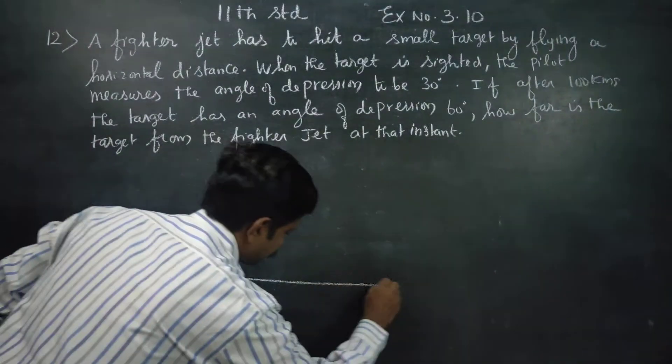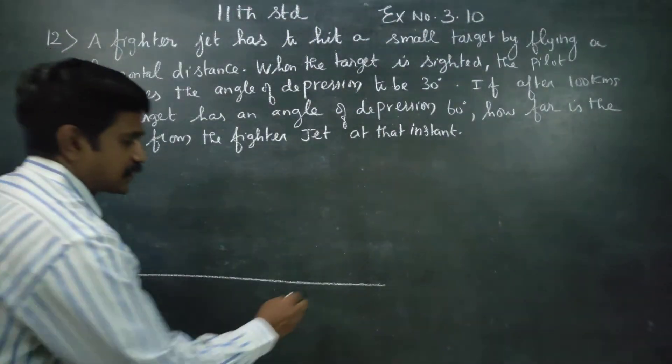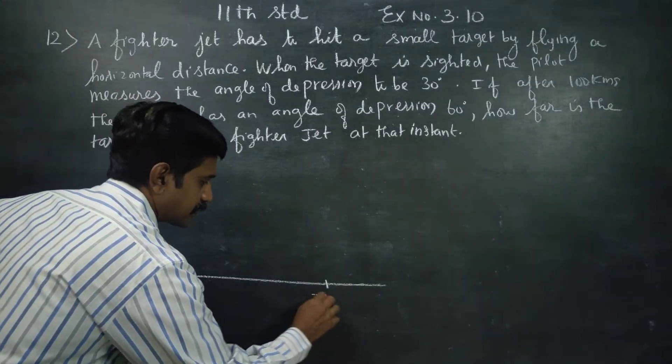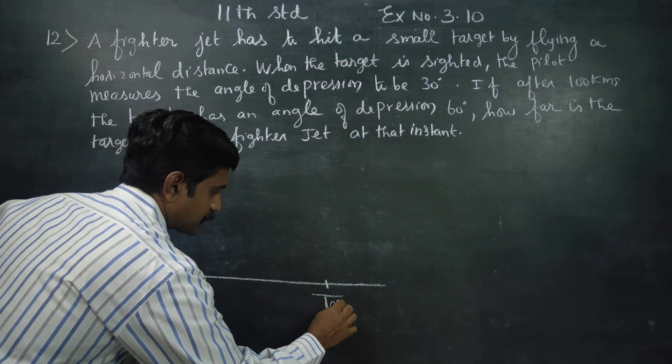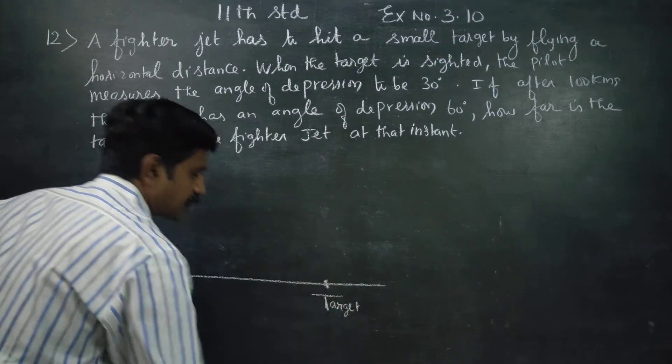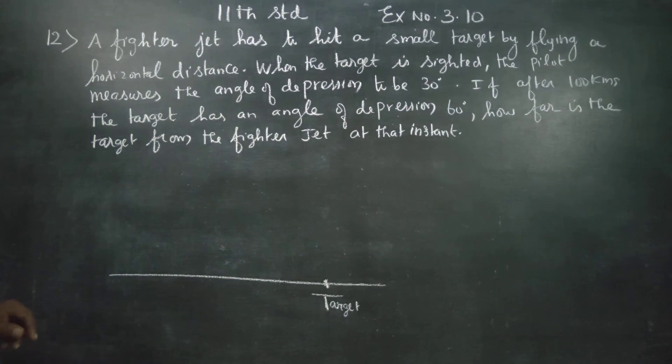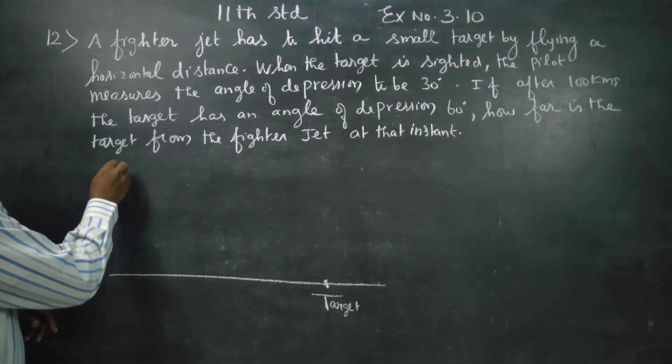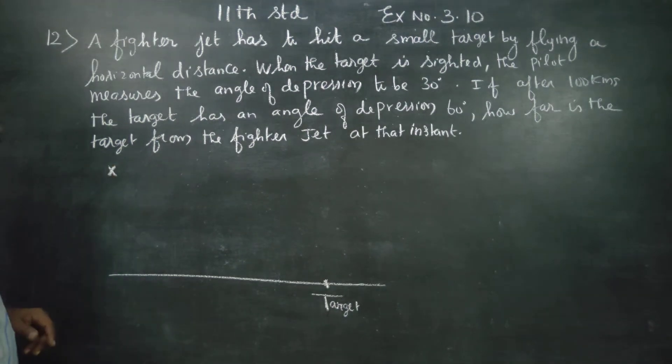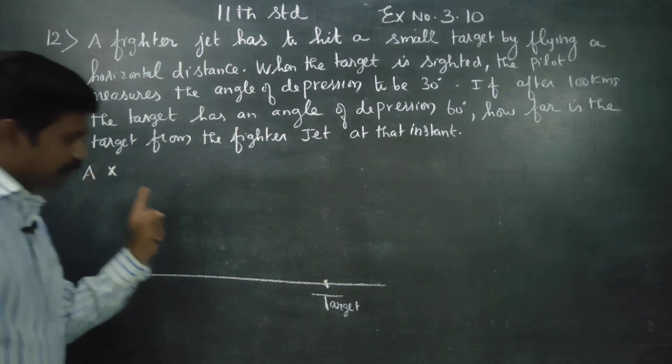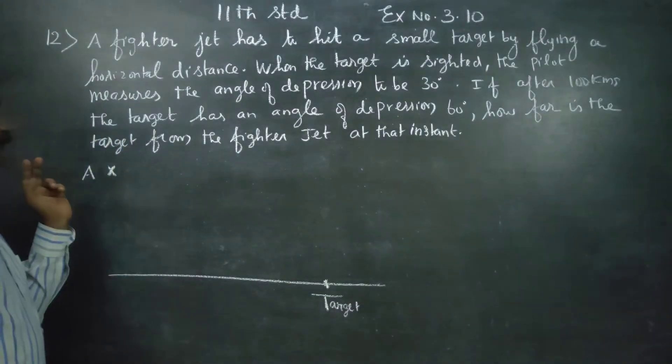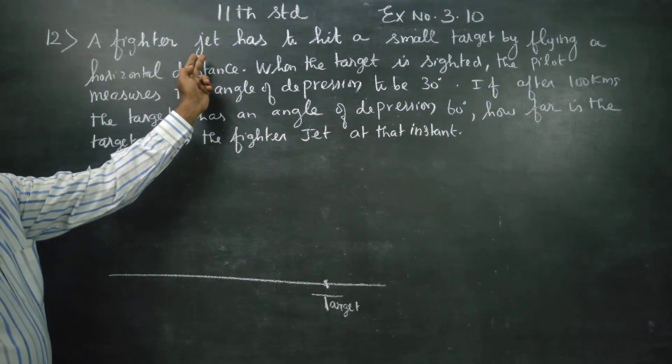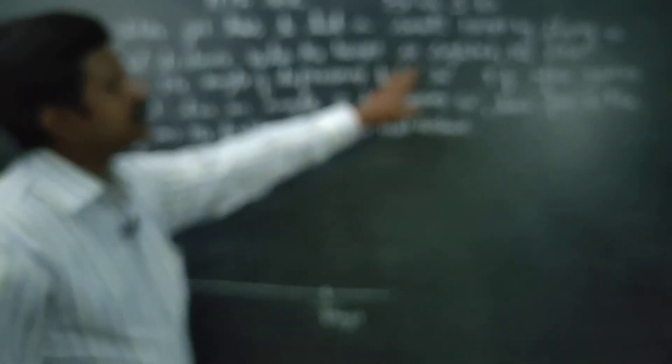This is my ground surface. Ground surface is here, and here is the target. The jet is at first position A. The fighter jet has sighted the target.